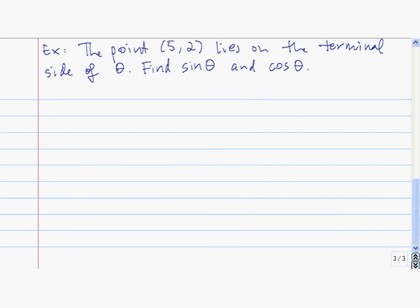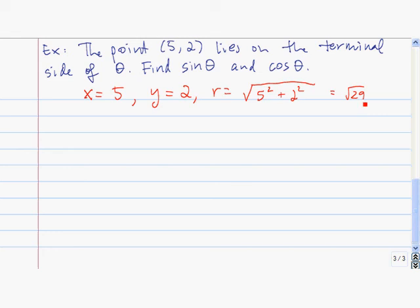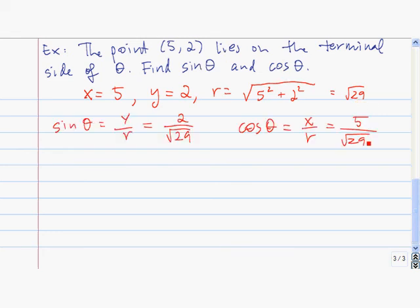Here's a problem for you to try — press pause while you work on it. You should have found that x is 5, y is 2, and r is the square root of 29. Using the definitions, sine of theta equals 2 over root 29, and cosine of theta equals 5 divided by root 29.